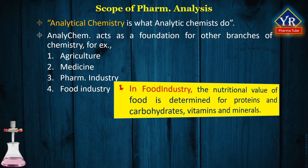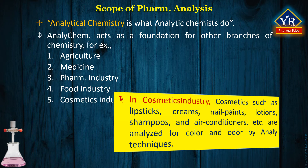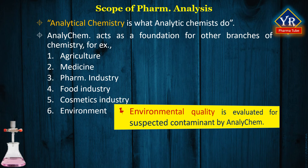Indeed, even the calories of food are often calculated from its chemical analysis. In the cosmetics industry, preparation of cosmetics such as lipsticks, creams, nail paints, lotions, shampoos, and conditioners play with two key things: color and odor. These coloring agents and fragrances are built by different chemical ingredients, so the quality and quantity of these ingredients should be known and can be analyzed by different techniques. Lastly, environmental quality is often evaluated by testing for suspected contaminants using the techniques of analytical chemistry — for example, pH of rain, river, and water resources, different environmental factors like temperature and humidity, and various organic and inorganic compounds and elements present in the soil.